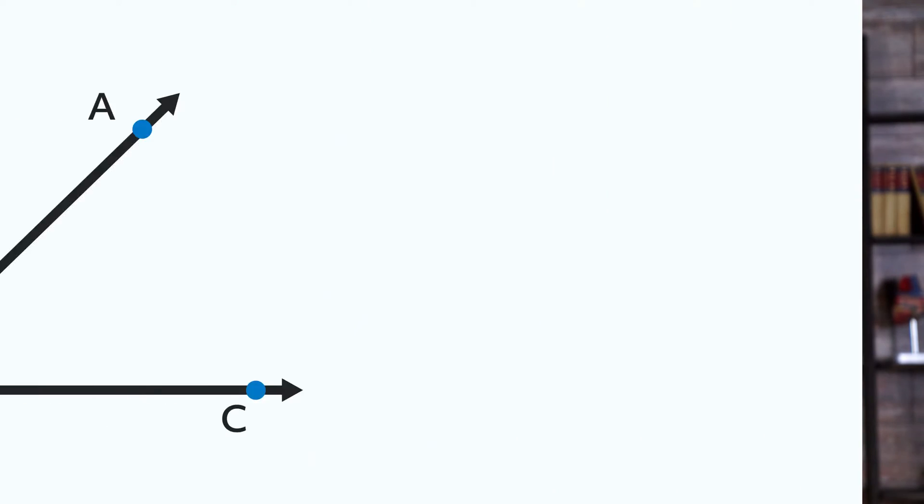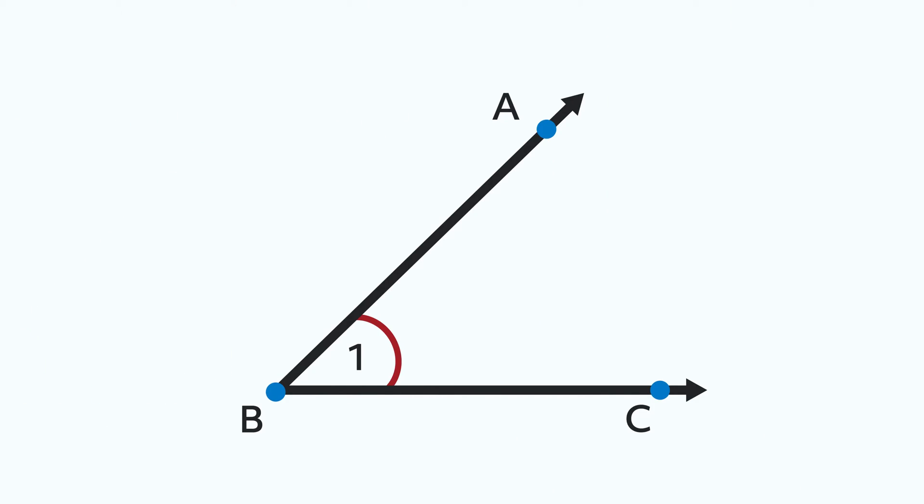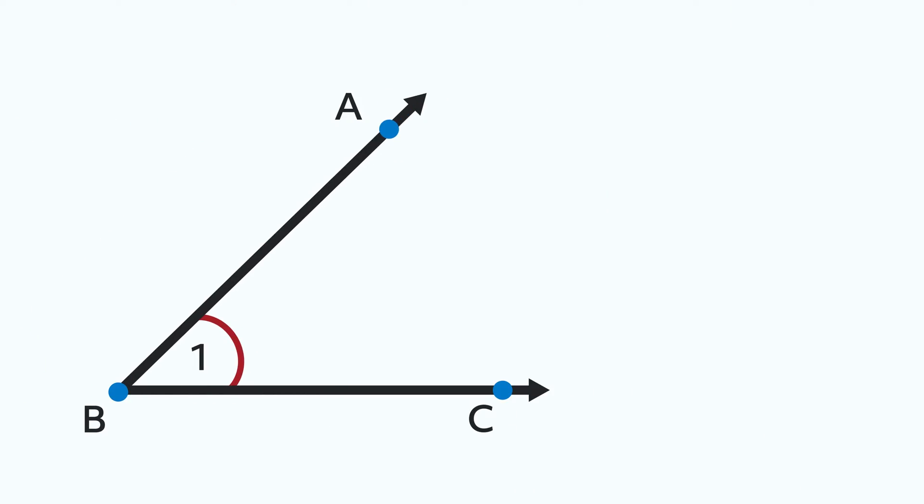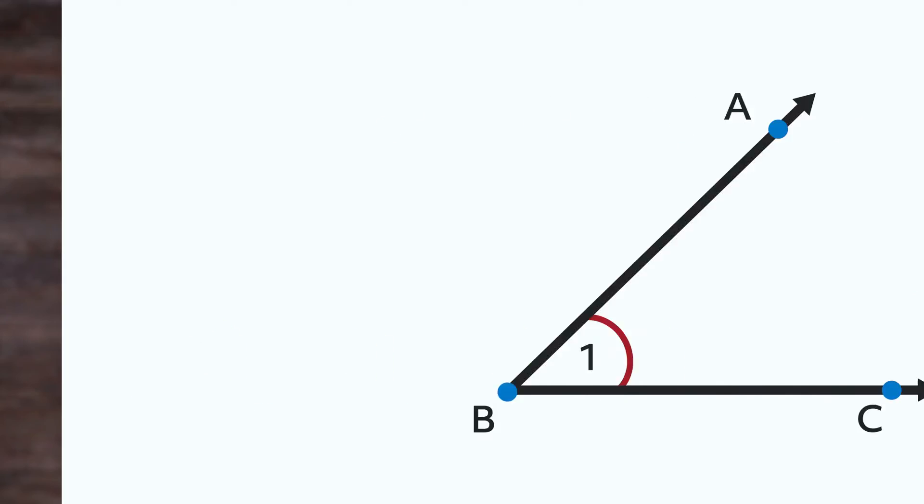Sometimes, angles will be labeled with numbers inside the arc, like this. Now we have an additional name for this angle. We now call it angle 1, or we can call it angle ABC, or we can call it angle B. Since most of us have three names, it's only fair that angles have a bunch, too.